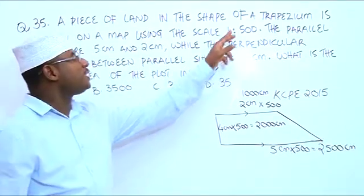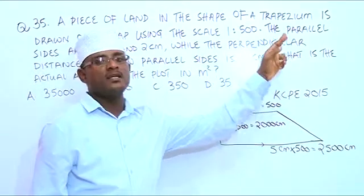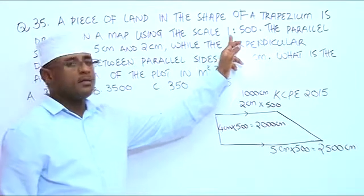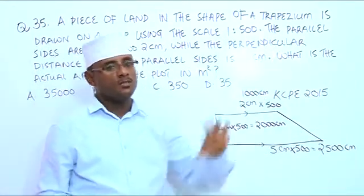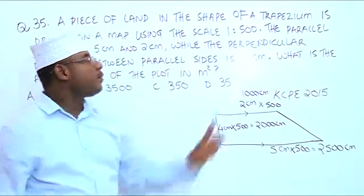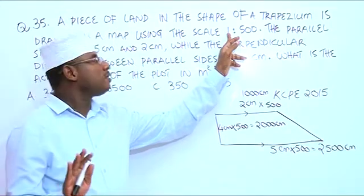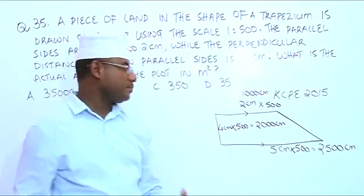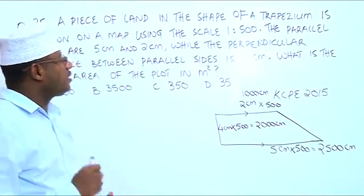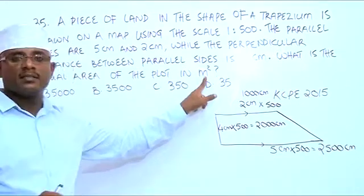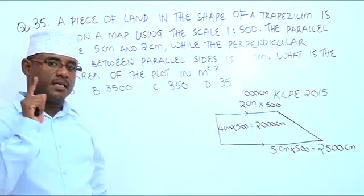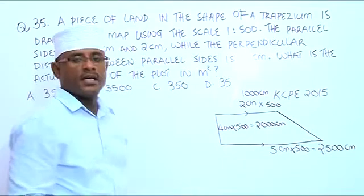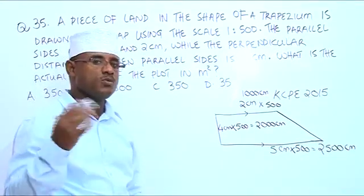We are not told that 1 centimeter represents 500 meters, nor that 1 centimeter represents 1 kilometer. We are just told to multiply whatever measurement by 500 to get the actual measurement. Now they want the area in meters squared, so the best thing to do is change all the measurements from centimeters to meters.